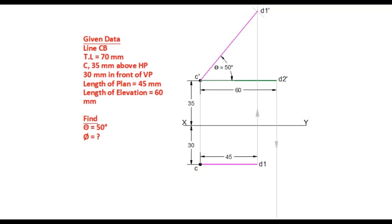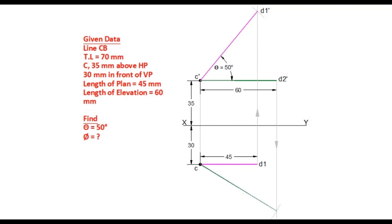Measure the true length of the line 70mm in the compass. From point C, cut an arc on the projector drawn through D2 dash. This point is D2. Line C D2 has true length and true inclination with VP. Measure this angle phi. While measuring, this angle phi is 31 degrees.